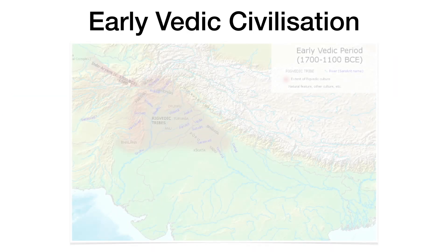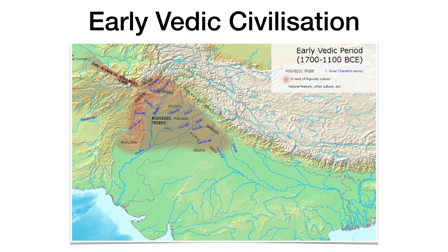In this map we can see where Aryans settled. The brown color region is where the early Vedic civilization flourished. The earliest Aryans settled here, which is now eastern Afghanistan, Punjab, and Uttar Pradesh.